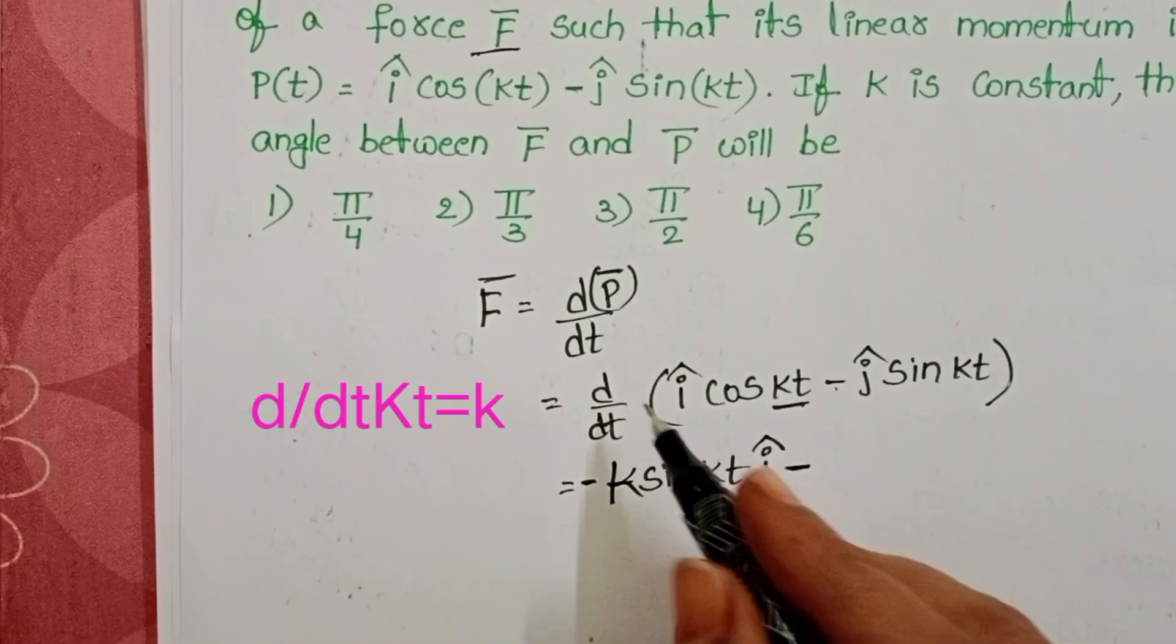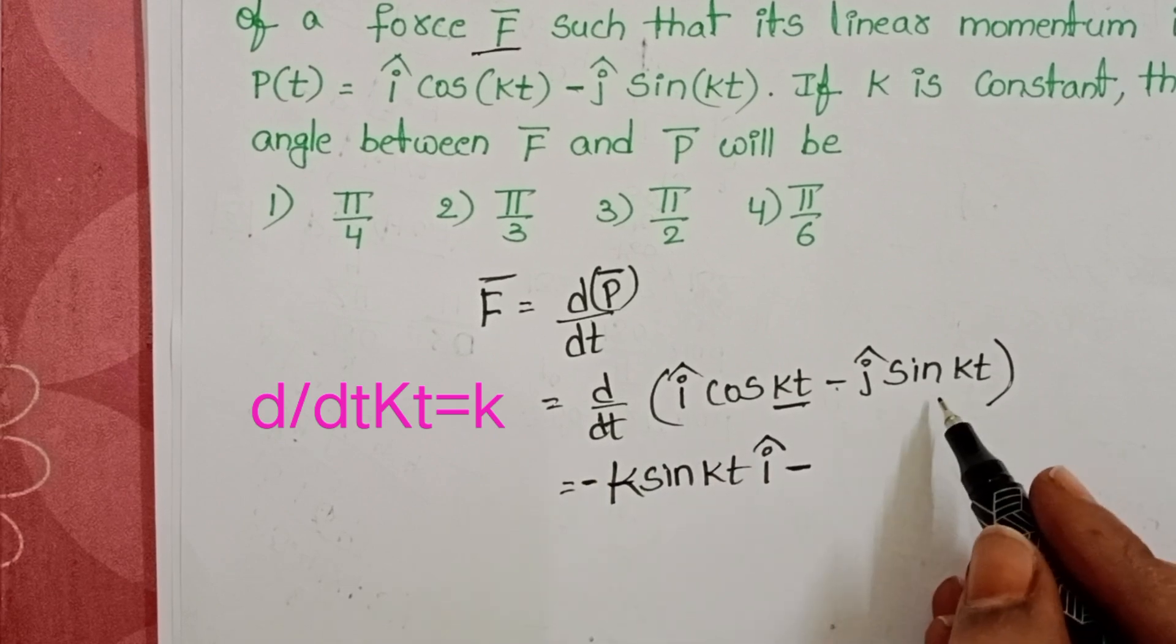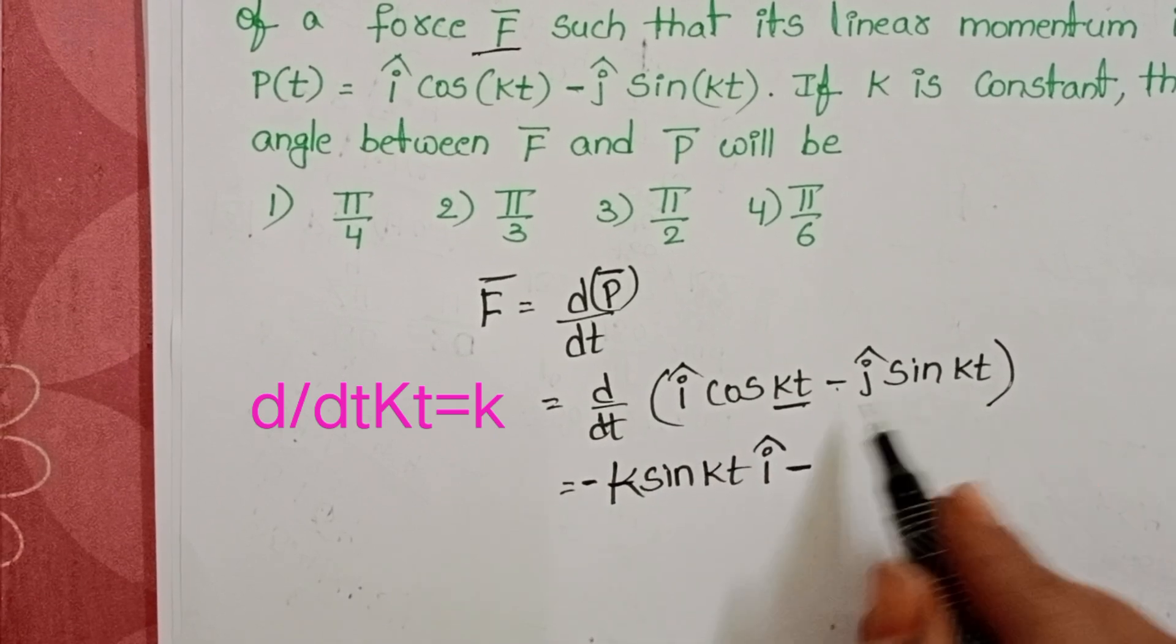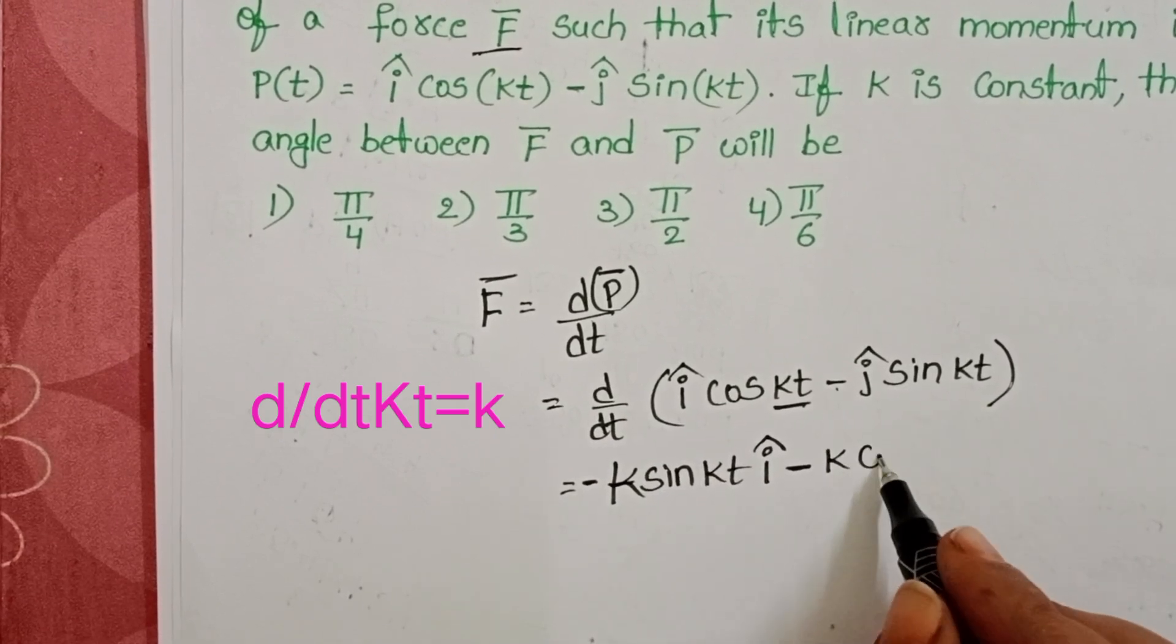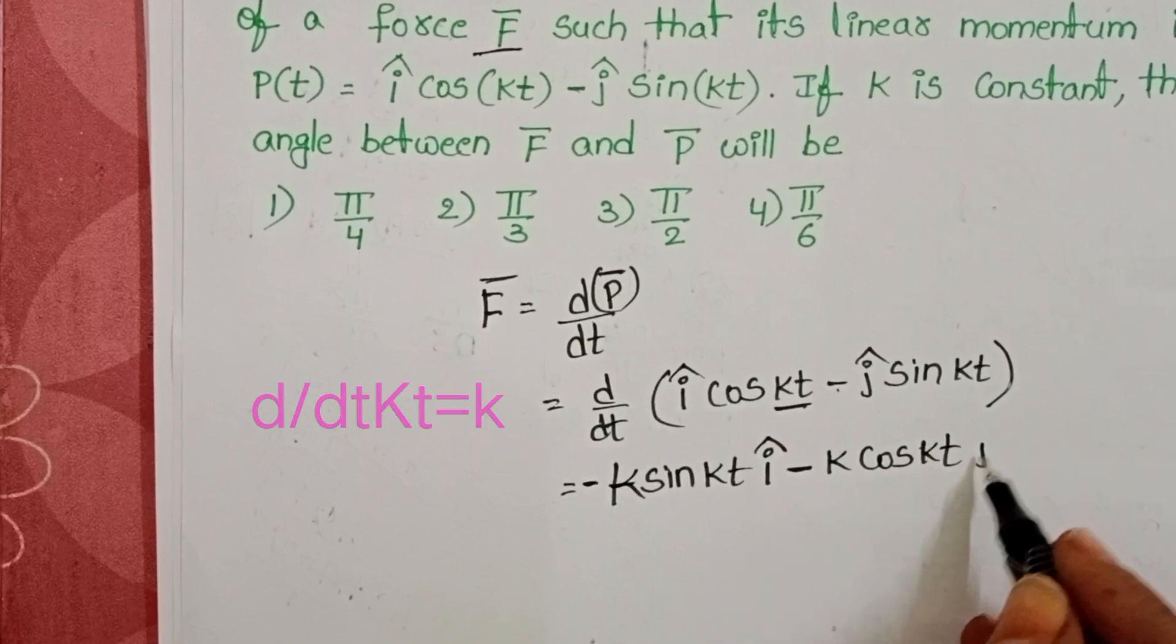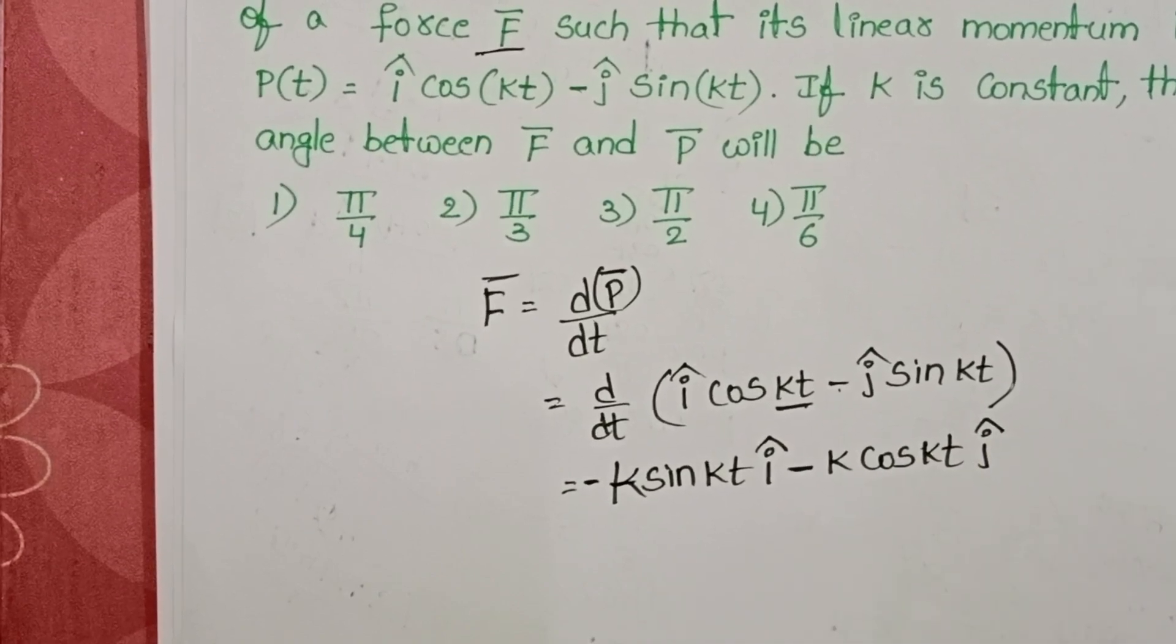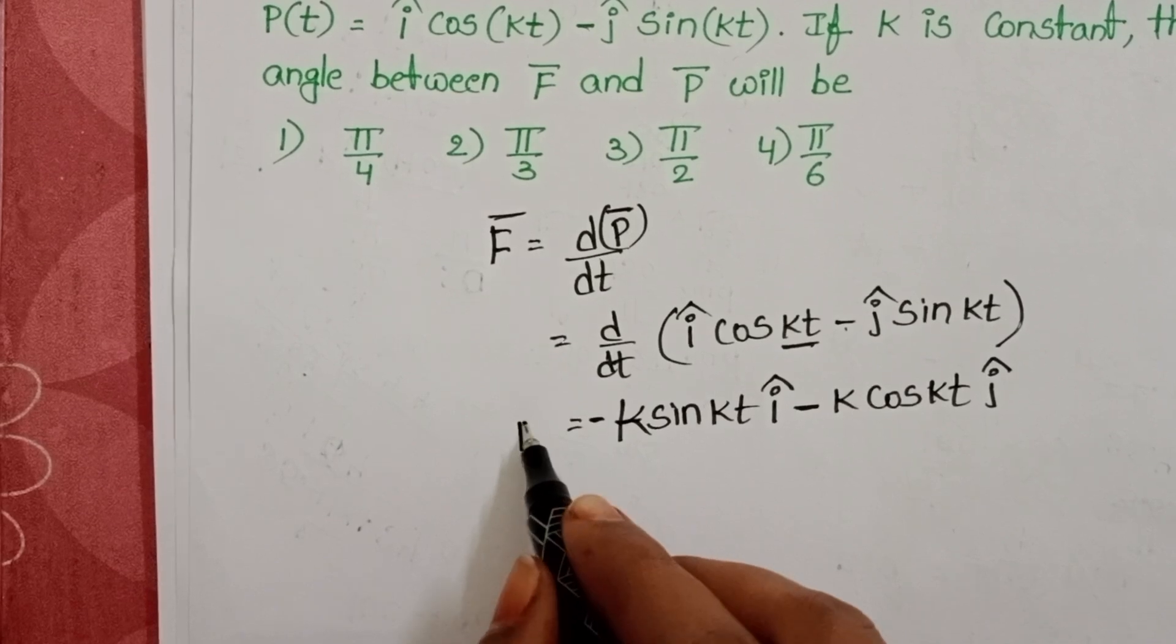K constant minus K sin KT I cap. Here minus sign is there. Differentiation of sign is cos. K is constant again. K into cos KT J cap. This is force.